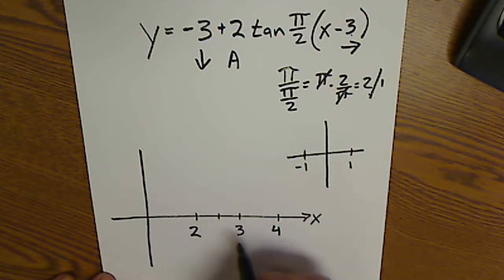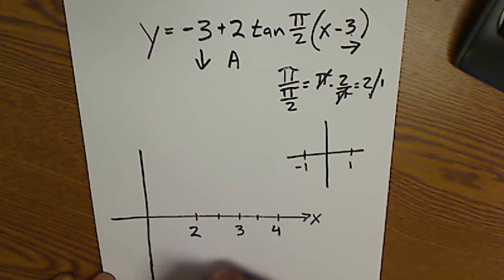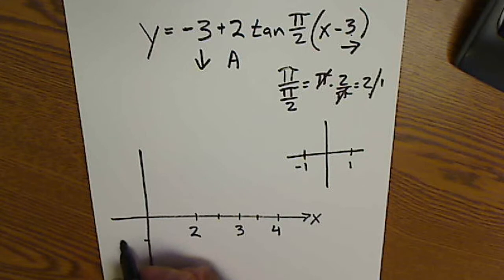Quarter cycle at 2.5 and 3.5. Vertical shift is down negative 3. From negative 3, I go up 2 and down 2.